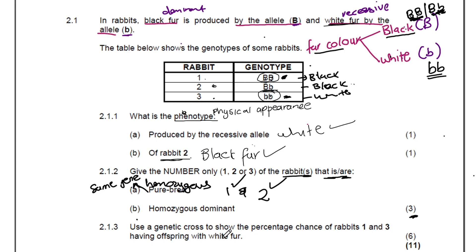Give the number only of the rabbit that is homozygous dominant. Homozygous dominant means having the same dominant gene — dominant dominant, same gene. That is rabbit one, which has capital B capital B. Then question 2.1.3: we are doing a cross.